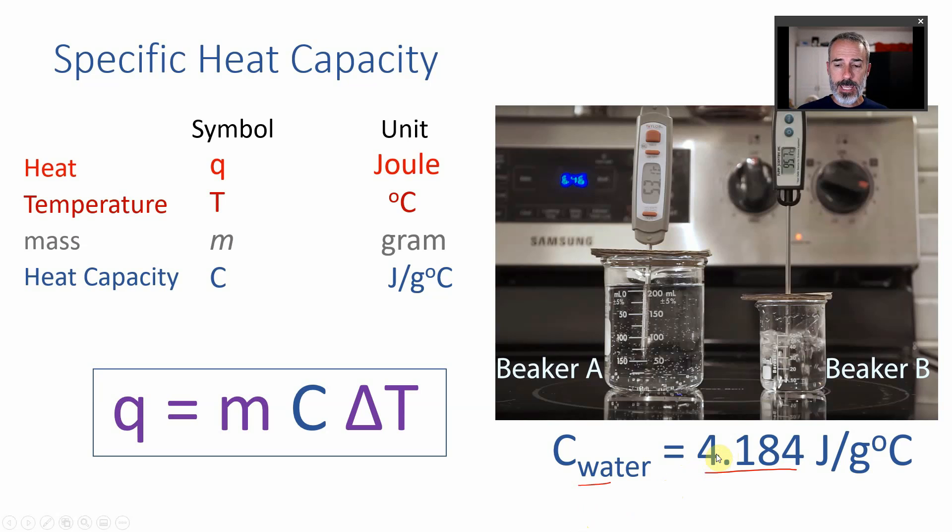When we get to other substances it will be a different value and it's something you have to get from a table. But what it's saying is if you want to increase the temperature of one gram of water by one degree Celsius it's going to take you about four joules of energy.